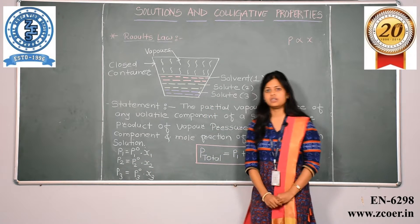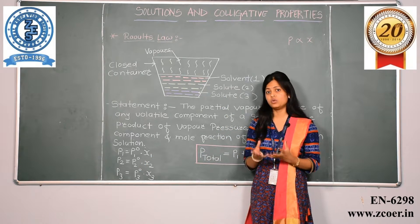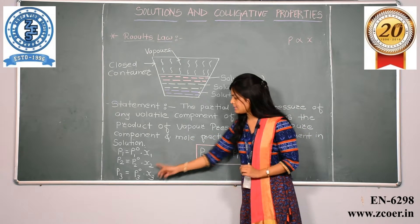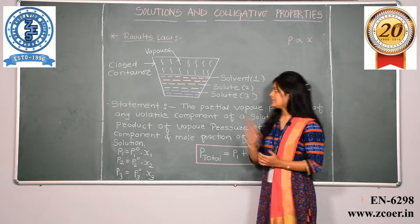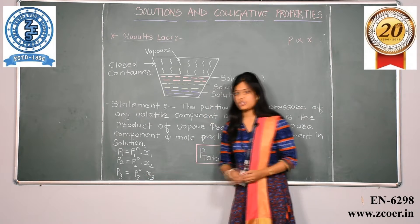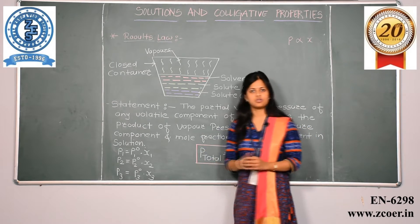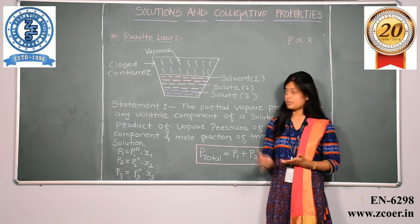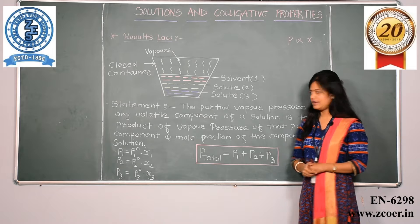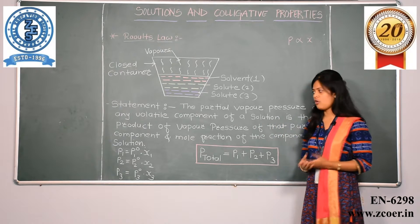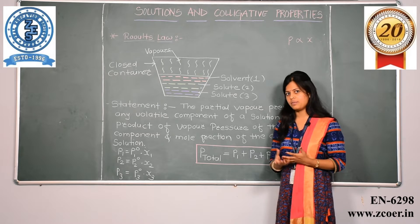Similarly, the partial pressure of component 2 equals P₂⁰ — the vapour pressure of pure component 2 — multiplied by the mole fraction of component 2. The partial pressure of component 3 equals P₃⁰ multiplied by the mole fraction of component 3. This is Raoult's Law, which states that the partial vapour pressure of any volatile component of a solution is the product of the vapour pressure of that pure component and the mole fraction of that component in the solution.